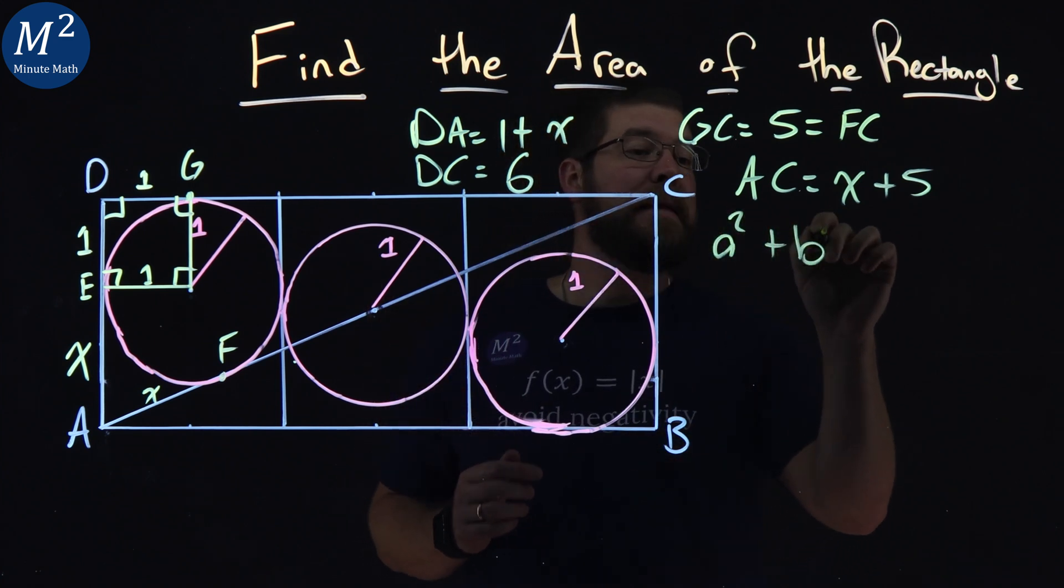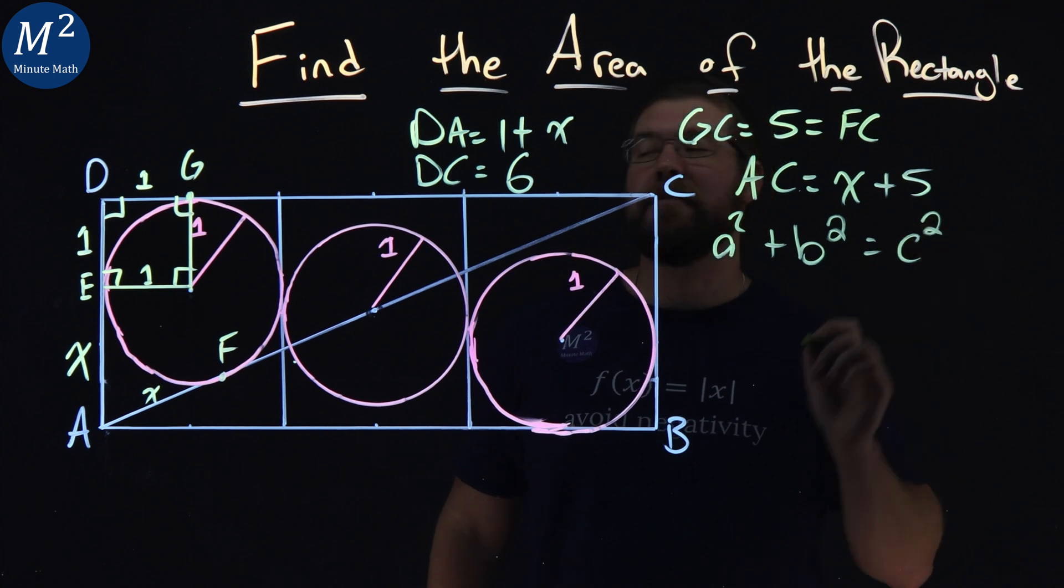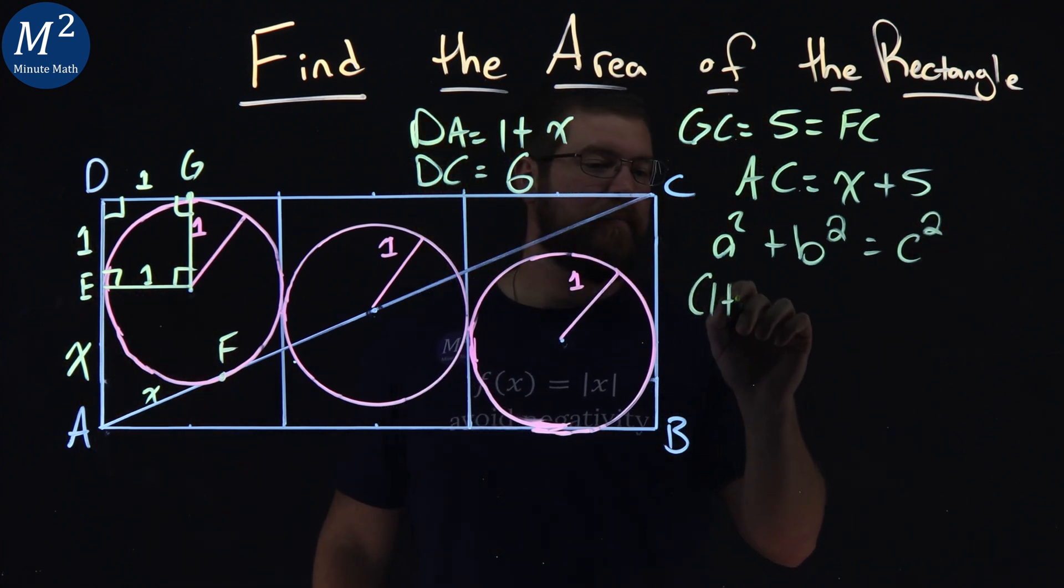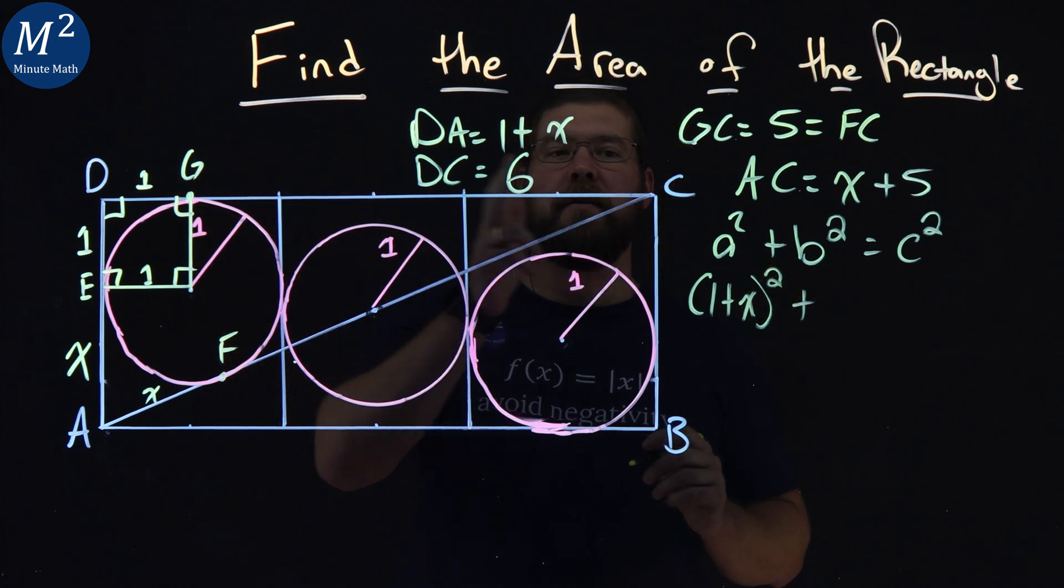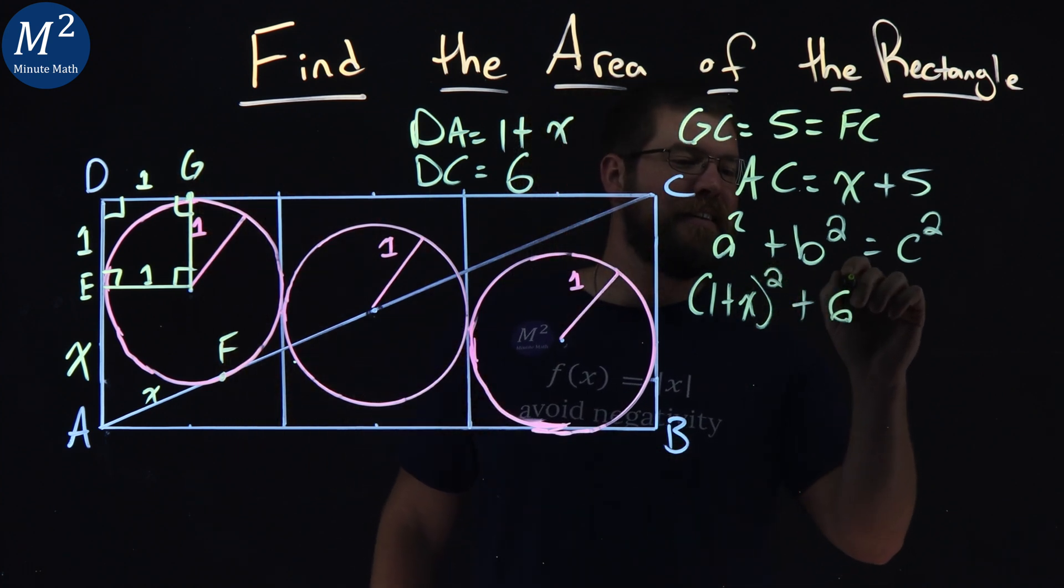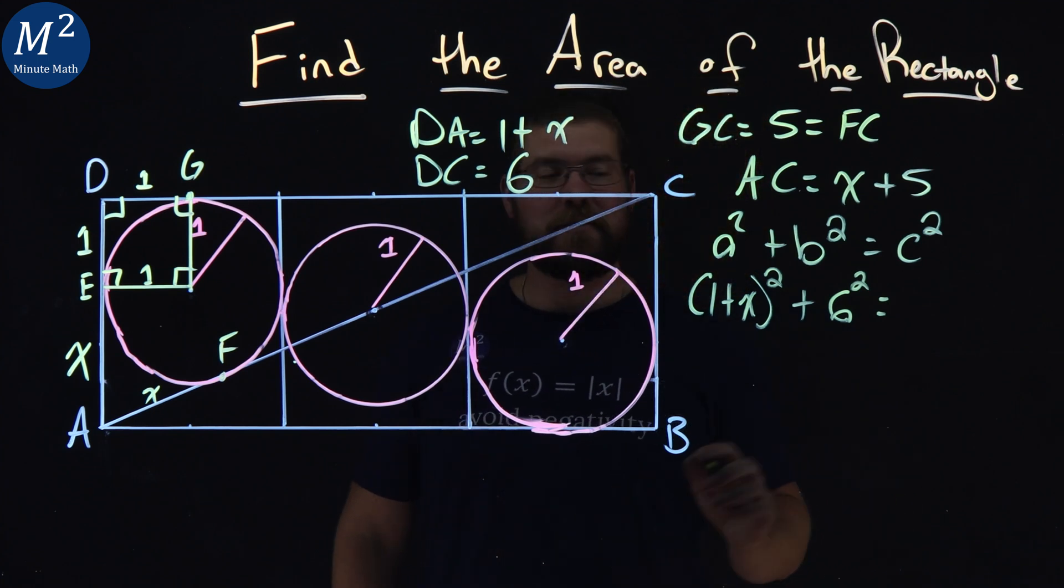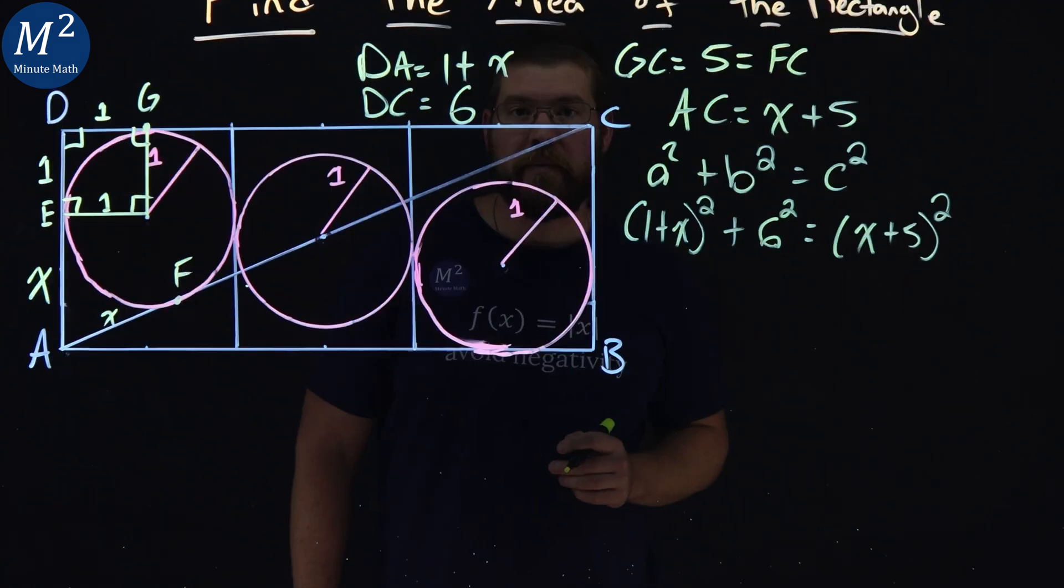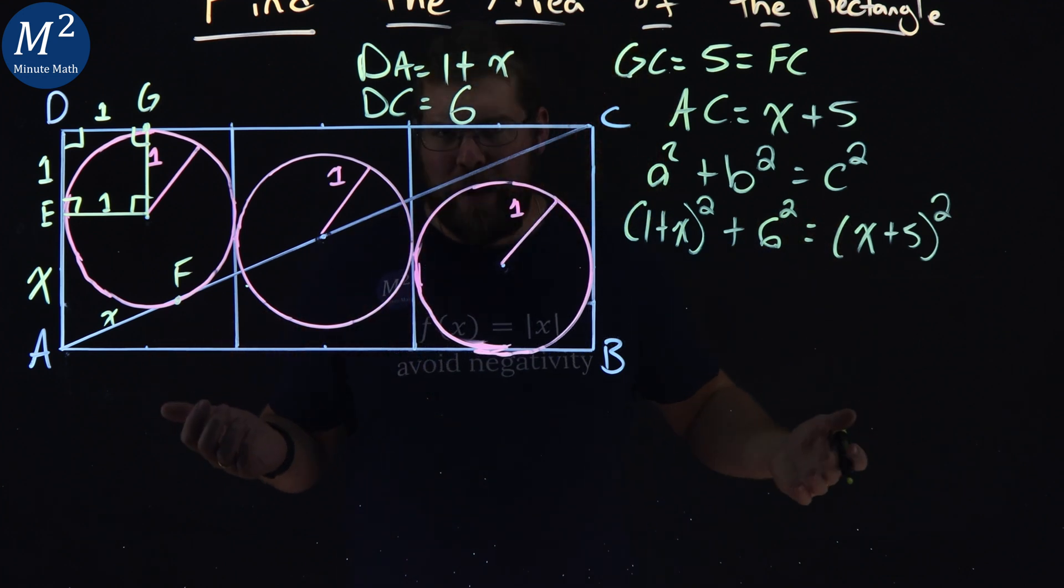It's DA squared plus AB squared equals AC squared. DA squared, let's call that 1 plus X all squared, plus AB squared, across here is 6 squared, equals AC squared, X plus 5 all squared.